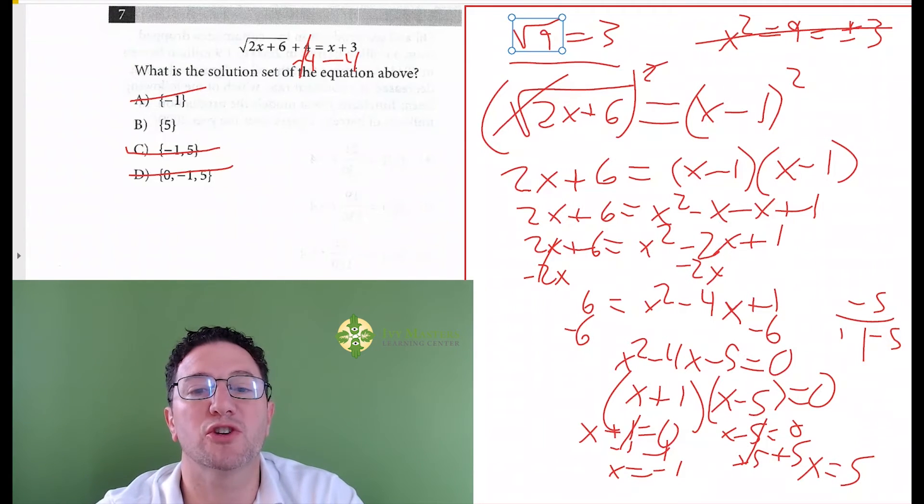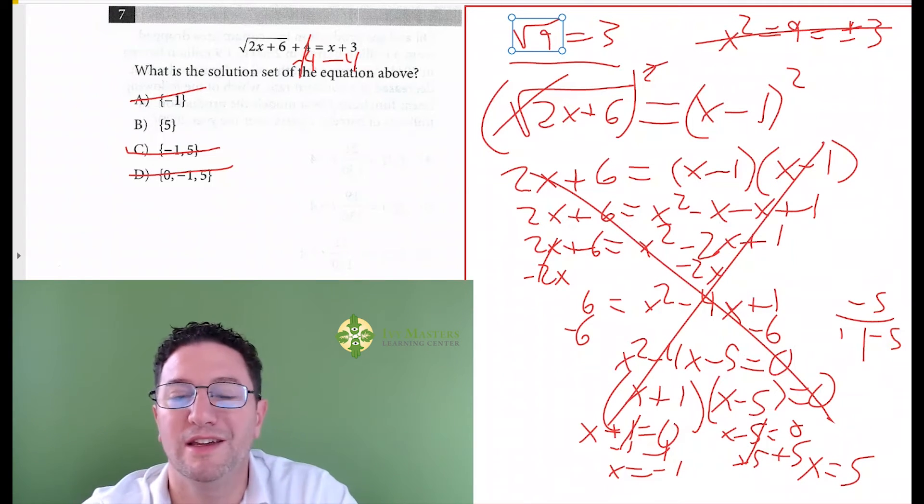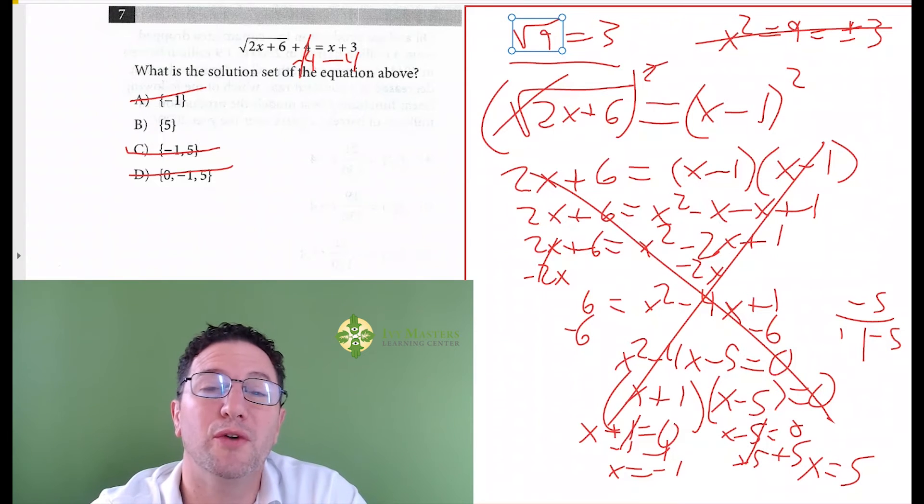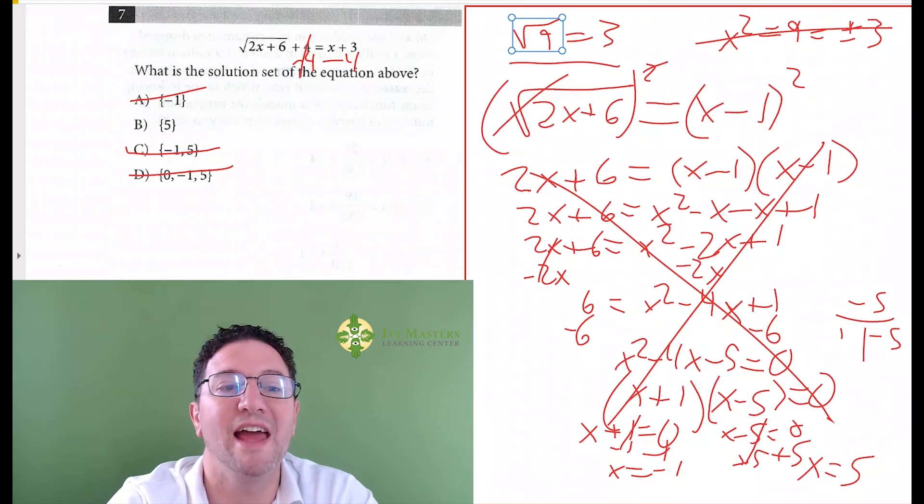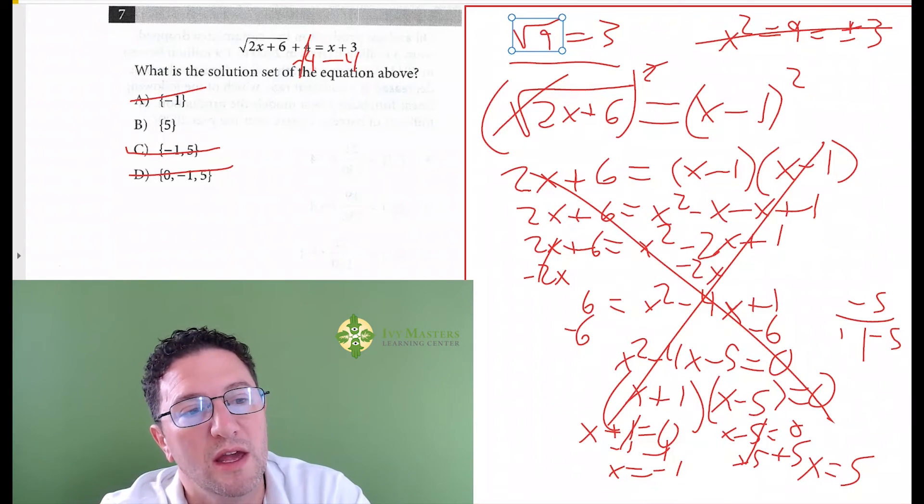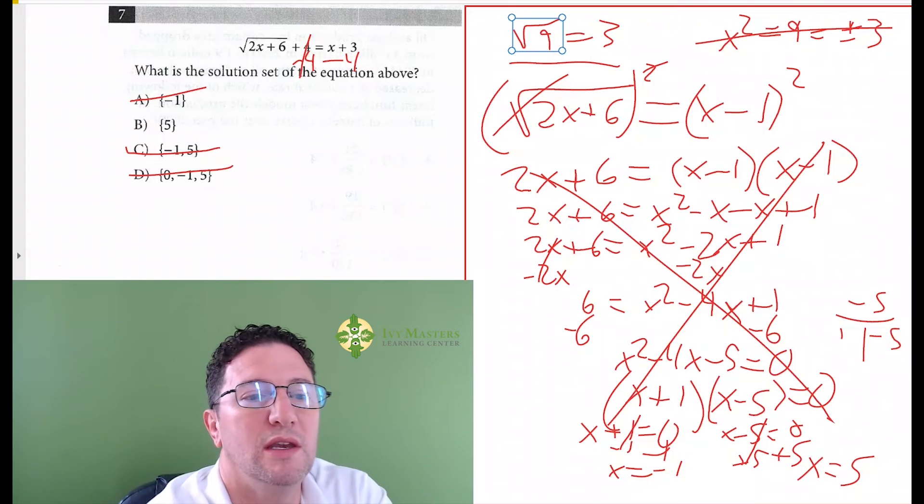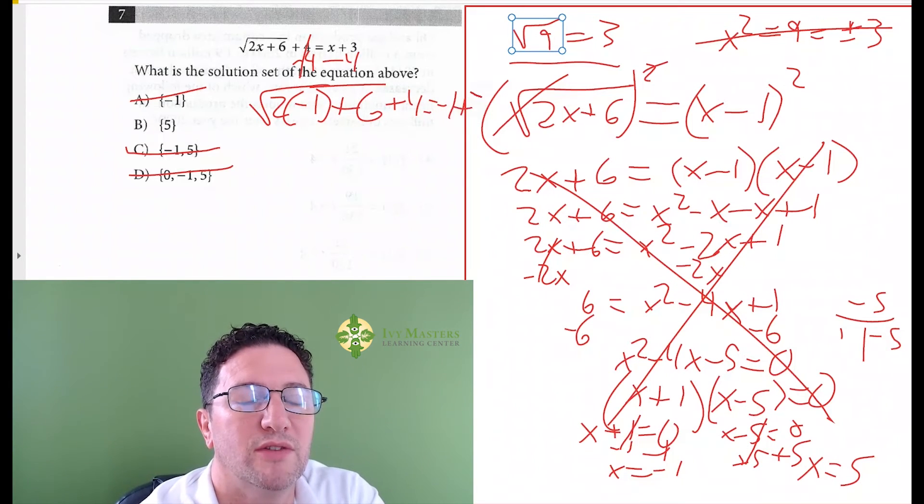Why are you wrong? Because you forgot to check for extraneous solutions. So this is a giant waste of time. And even after you waste all that time, you could forget to plug back in for extraneous solutions. You've got to plug these in anyway, so you might as well plug them in right off the bat from the answer choices.